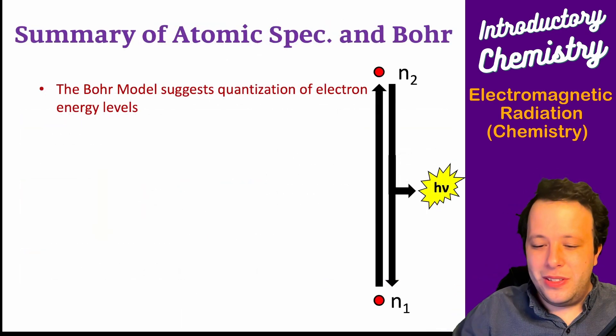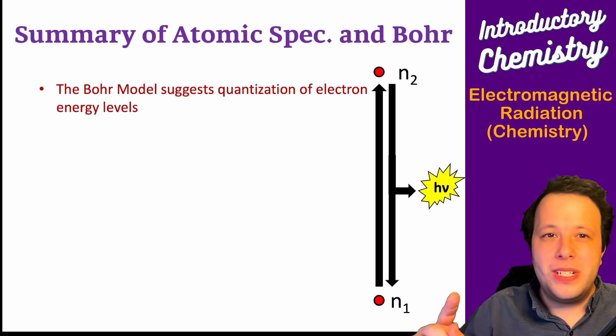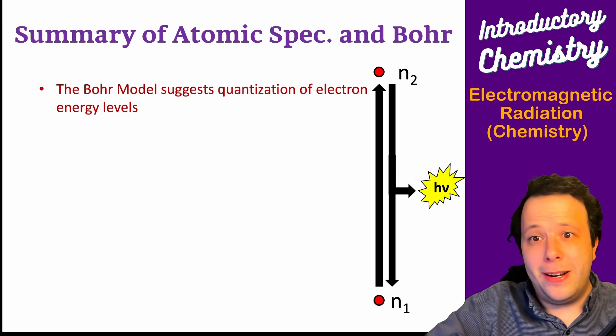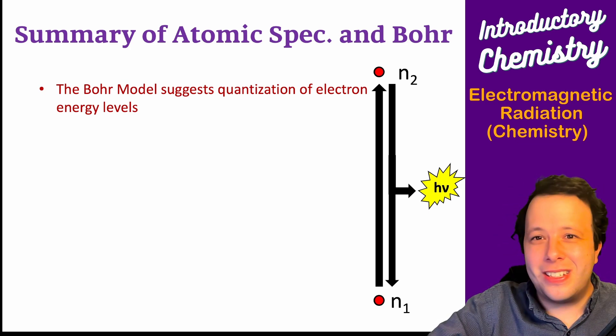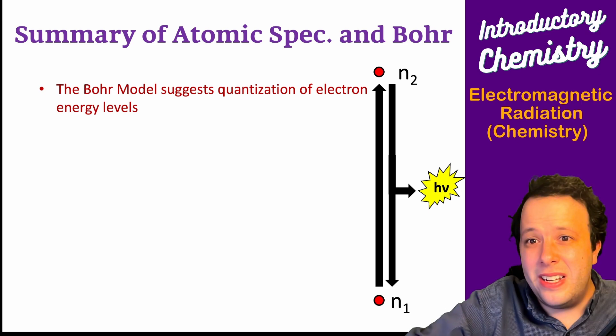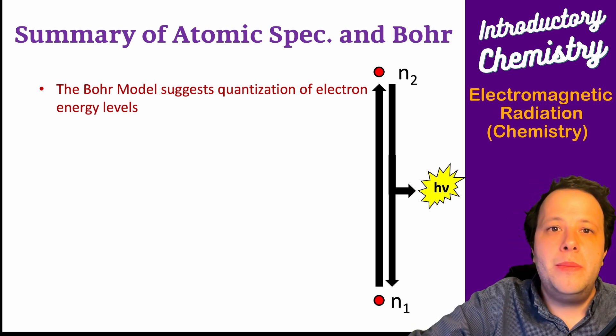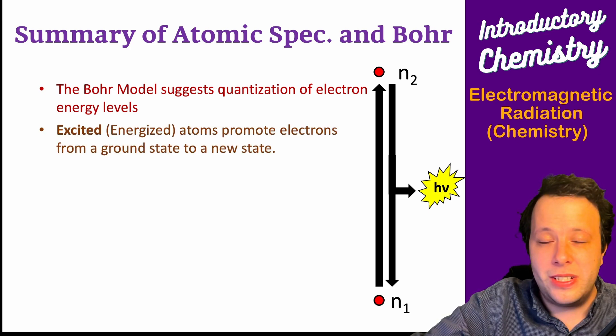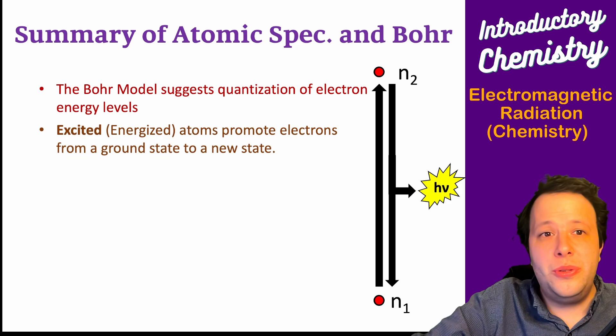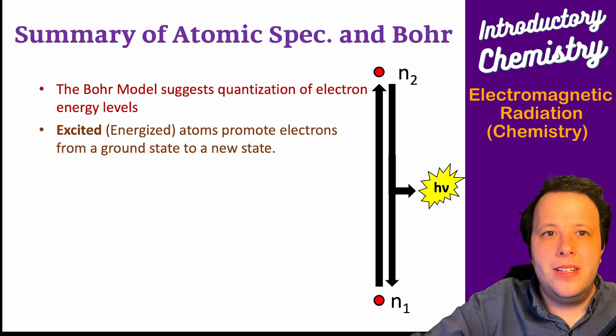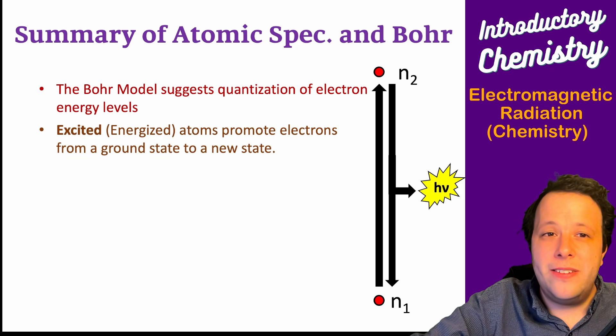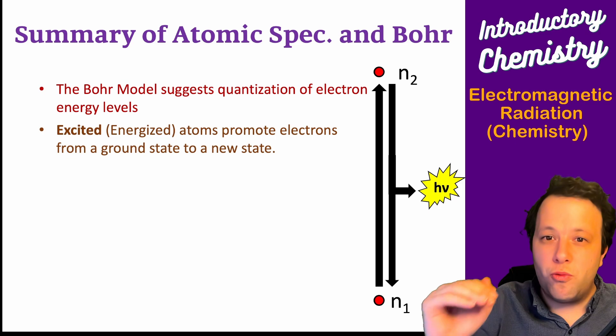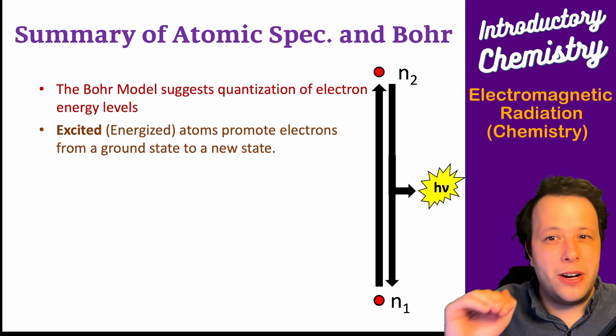What's the summary? The Bohr model suggests quantization of electron energy levels. We have n equals 1, 2, 3, 4, 5 to infinity. Every single one of these, when we have an excited level, when we promote an electron to a higher level, it goes from a ground state, its lowest level where it's relaxed, to a newer higher state when it's excited.